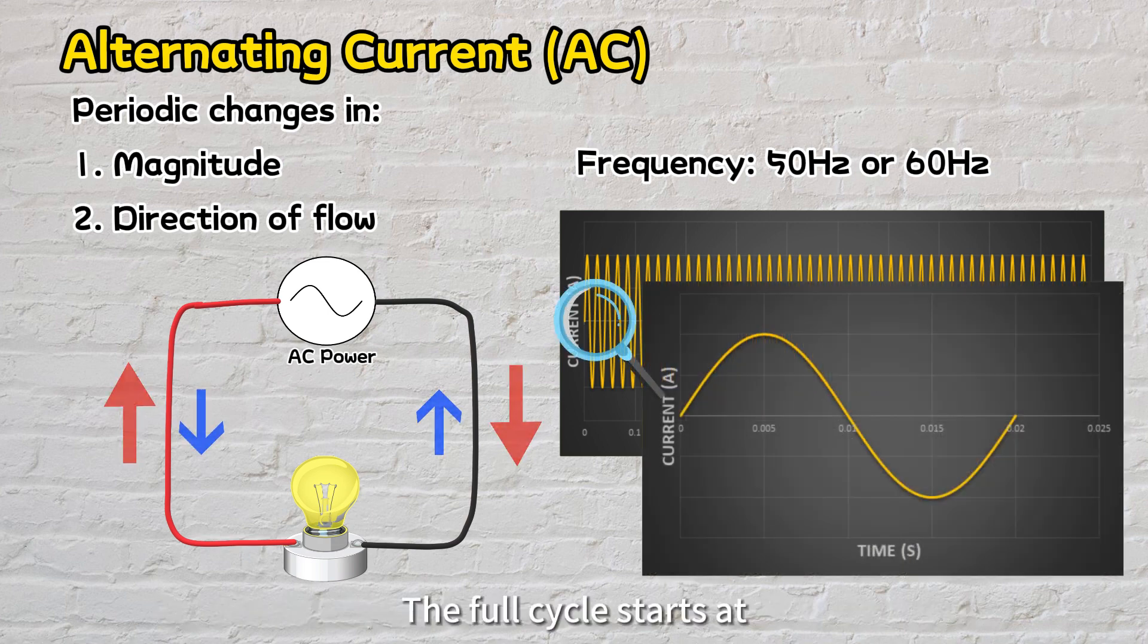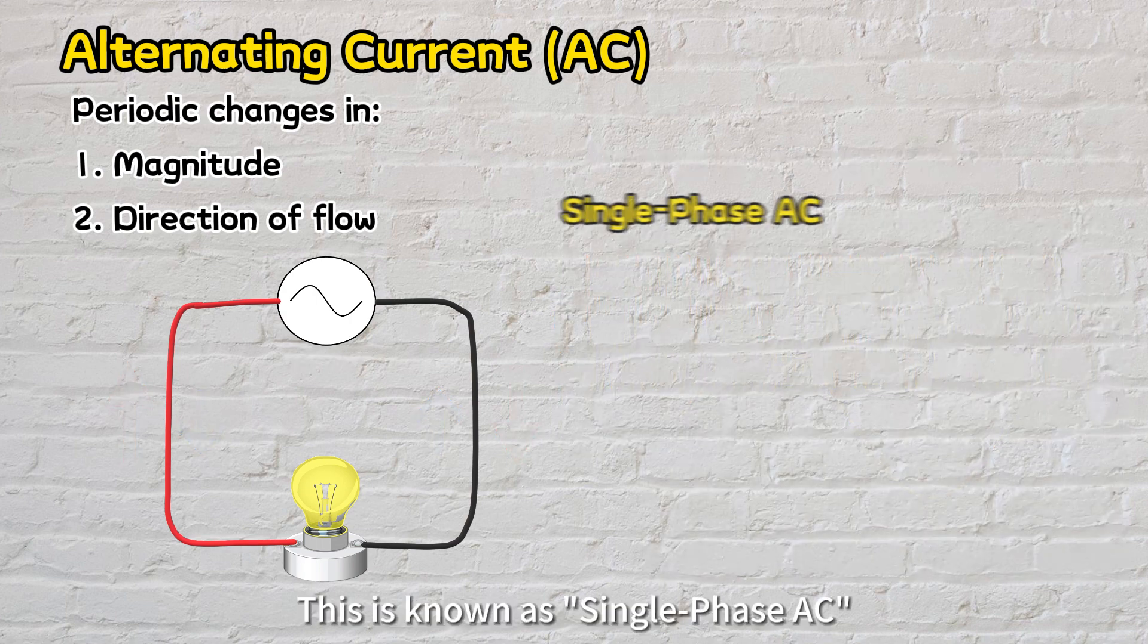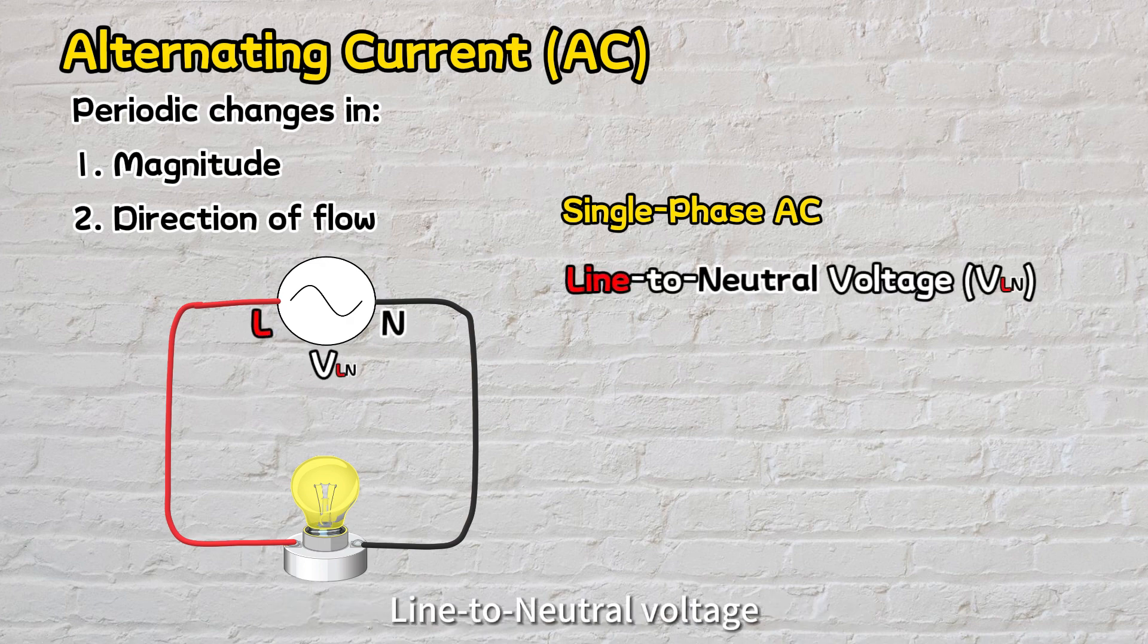A full cycle starts at 0 degrees and finishes at 360 degrees. This is known as single phase AC, where the voltage takes on the form of line to neutral voltage, or VLN.